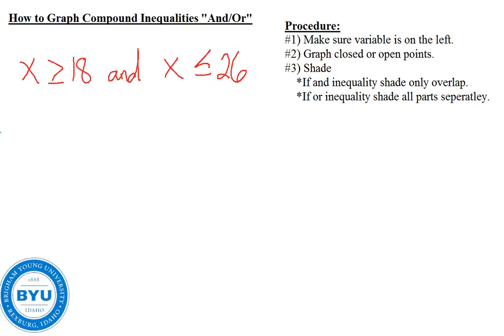When dealing with compound inequalities, we'll use two words to distinguish how we're going to relate the inequalities. We can use the word and or we can use the word or, and each one acts a little differently. So let's talk about and inequalities first.